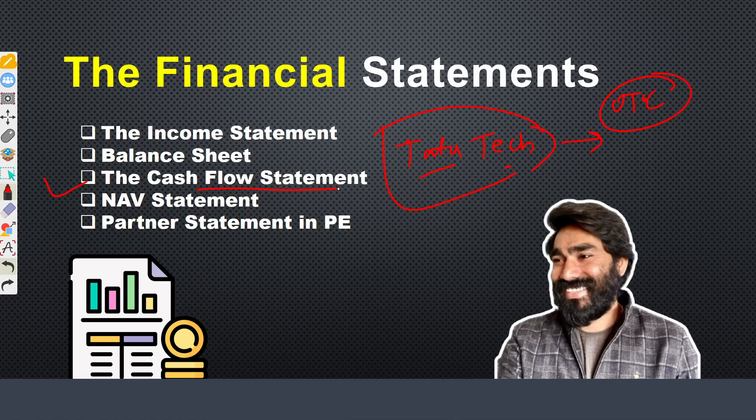The income statement represents the aggregate values of income-related transactions — dividends, interest payments, capital gains — and expense-related transactions like management fees, admin fees, and legal fees. All gains are recorded on the credit side and all expenses and losses on the debit side. The income statement helps us understand the net profit or net loss of the fund.